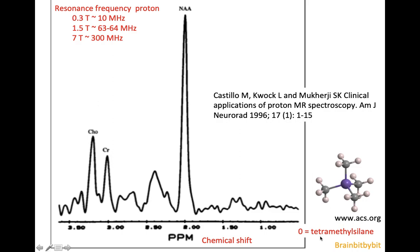At zero is a molecule called TMS, which is silicon surrounded by four methyl groups and protons arranged very symmetrically. There are three large peaks in the brain which are — alphabetically — choline, creatine, and NAA, so it's a good thing the scale has been inverted.